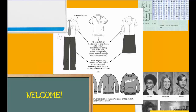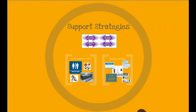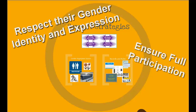Now, what about dress codes? Clothing, hair, and accessories are vital parts of every student's self-expression and are often related to their gender. All students, including trans and gender non-conforming students, should have the right to dress in accordance with their gender identity within the constraints of your school or district dress codes. For example, if there's a length requirement for skirts, it should apply equally to all students, regardless of their gender identity. And you shouldn't enforce the dress code more strictly against trans or gender non-conforming students than any other students. While there are many components to meeting the needs of these students, it all boils down to this: respect their gender identity and expression, ensure they're allowed to participate fully in school in ways consistent with their identity, and prioritize their privacy.